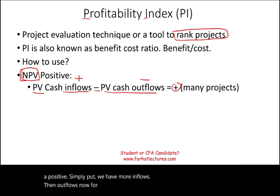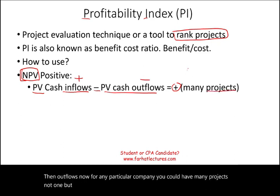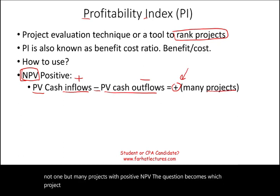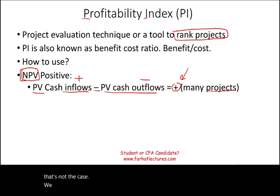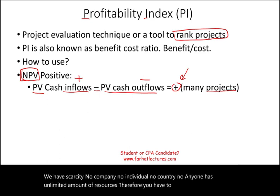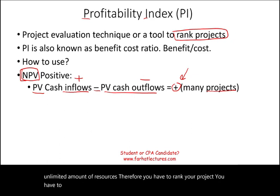For any particular company, you could have many projects — not one, but many — with positive NPV. The question becomes: which project to invest in? If we had an unlimited amount of money and resources, we would invest in all projects, but obviously that's not the case — we have scarcity. No company, no individual, no country has unlimited resources. Therefore, you have to rank your projects and accept some while passing on others.